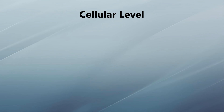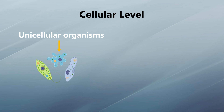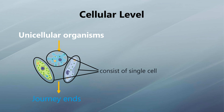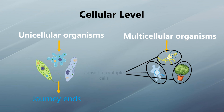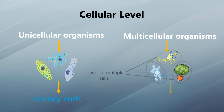The journey of levels of organization for unicellular organisms — that are prokaryotes and most protists — ends here, because the entire organism consists of a single cell. However, in multicellular organisms — that are most fungi, all animals, and all plants — the organism consists of up to trillions of cells, so the journey still continues.